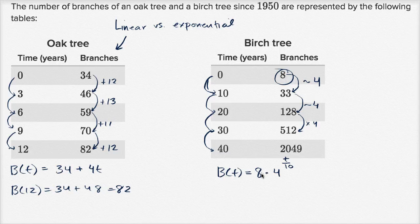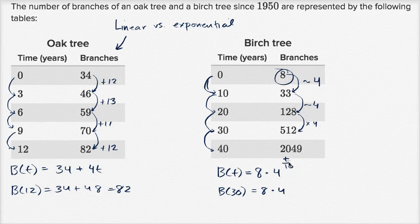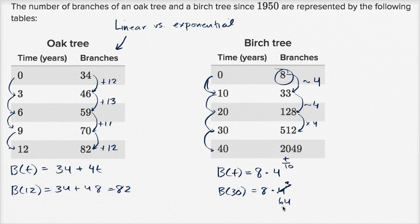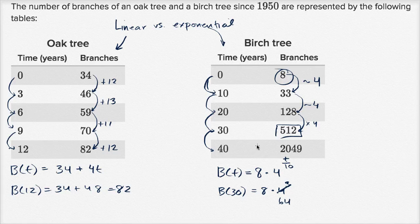And you could even verify this for yourself. Try out what B(30) is going to be. B(30) would be eight times four to the 30 divided by 10, to the third power. And what is that going to be? That's going to be four to the third is 64. Eight times 64 is 480 plus 32, it is 512. So once again, this exponential model for this data does a pretty good job.